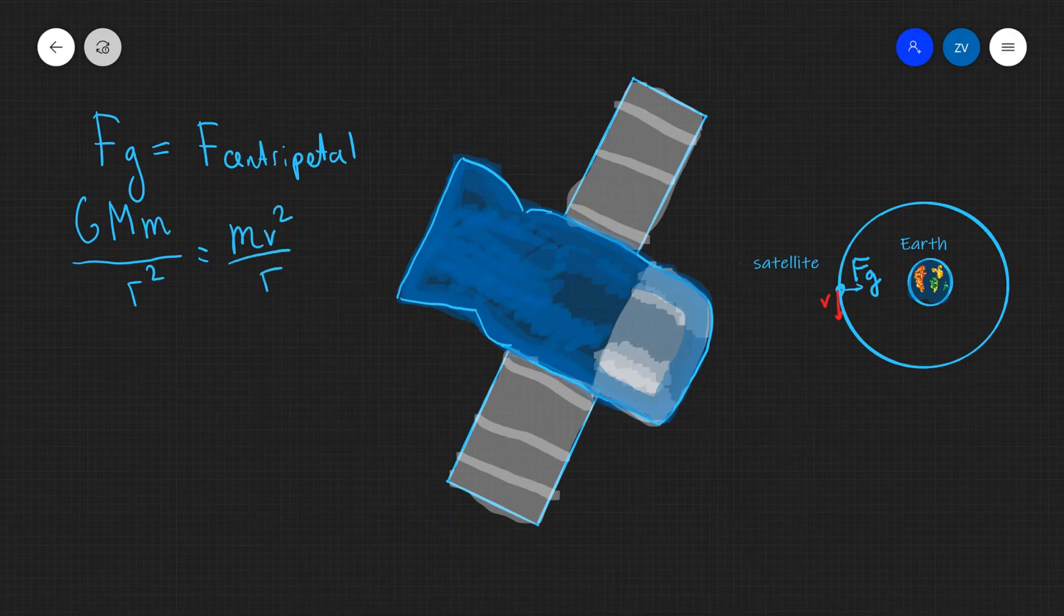Notice that in this case r is essentially the radius of this circle over here. So this over here is r.